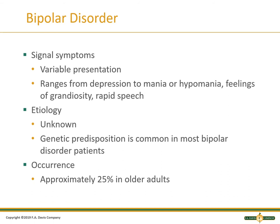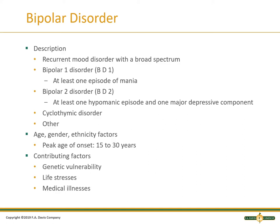Bipolar disorders have a variable presentation — patients can be depressed, manic, or hypomanic; they could be a different person when they come see you. Feelings of grandiosity, rapid speech, and spending a lot are what you see with bipolar disorders. Approximately 25% in older adults; genetic predisposition is very common, so taking a good family health history is important. It's a recurrent mood disorder with a broad spectrum — they can come in for mania the first time, then be hypomanic or depressed the next. Bipolar 1 involves at least one episode of mania; bipolar 2 is at least one hypomanic and one major depressive episode. Peak onset is usually ages 15 to 30.